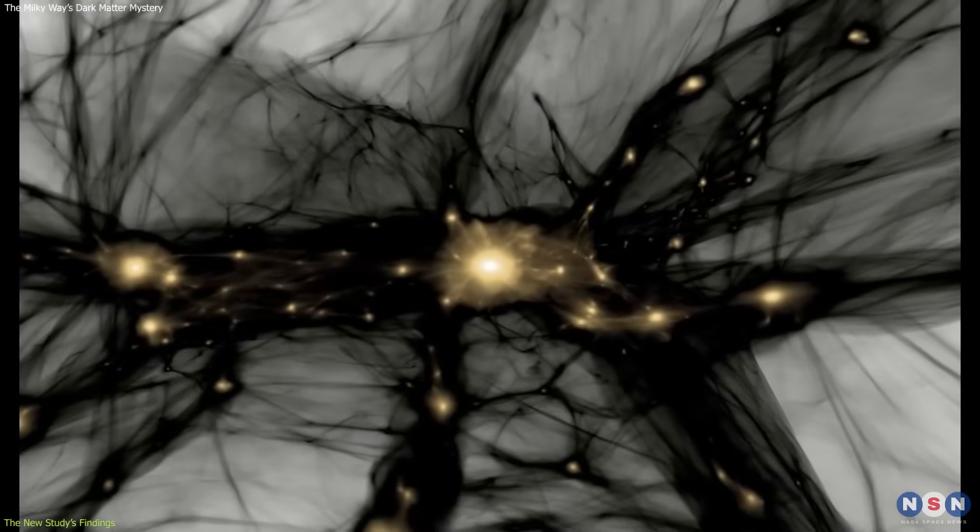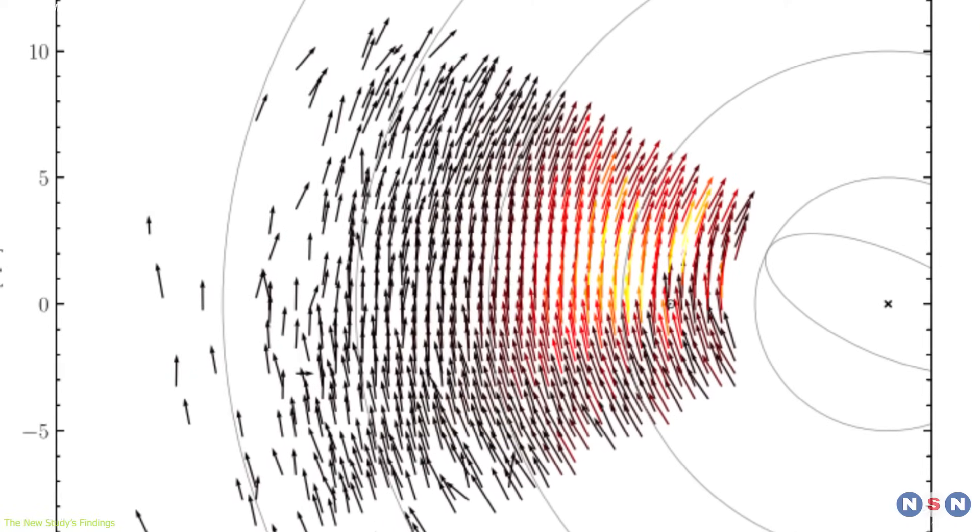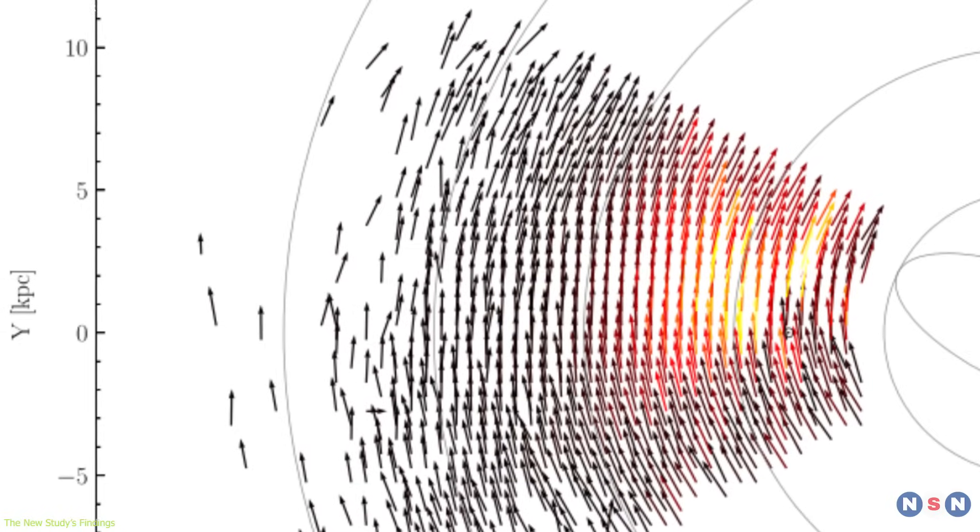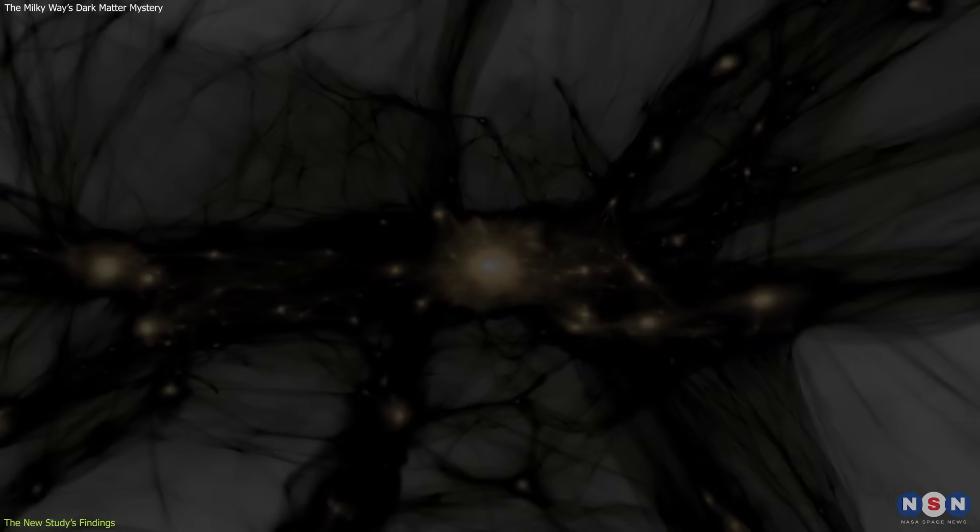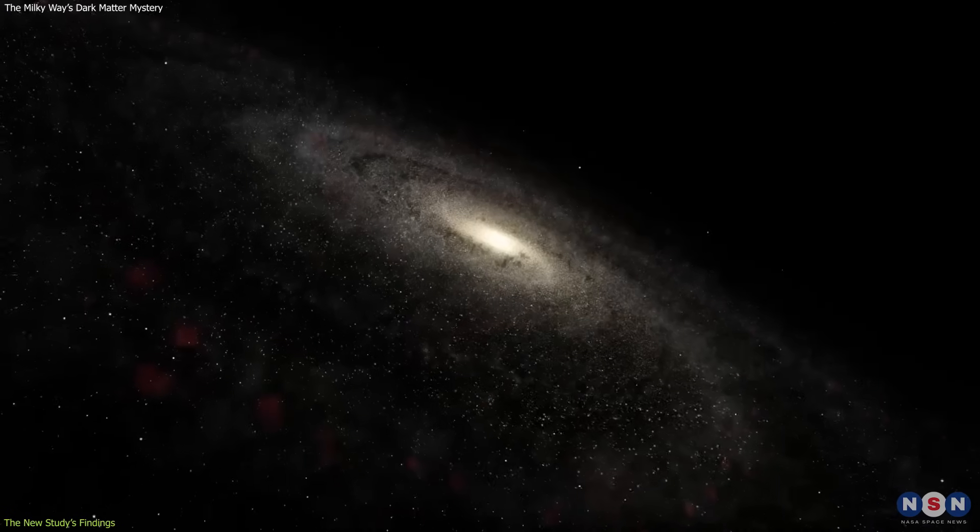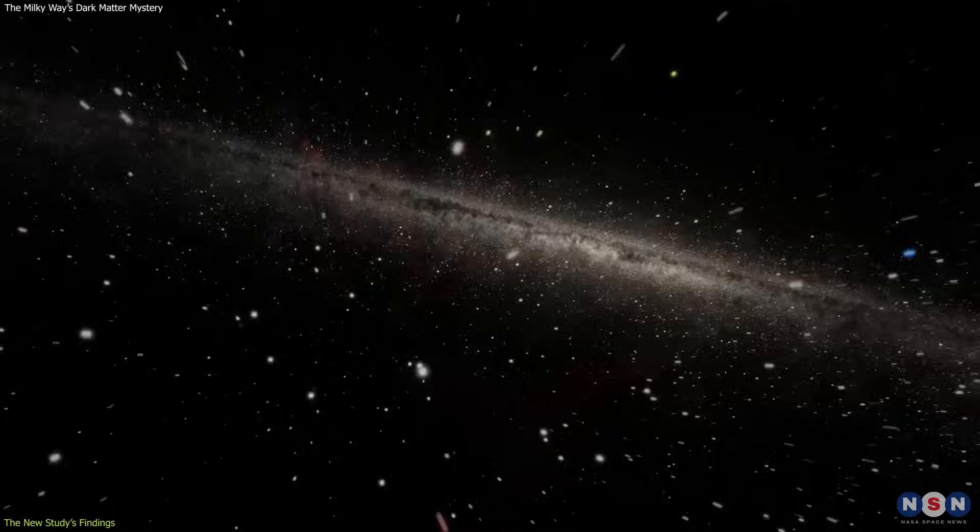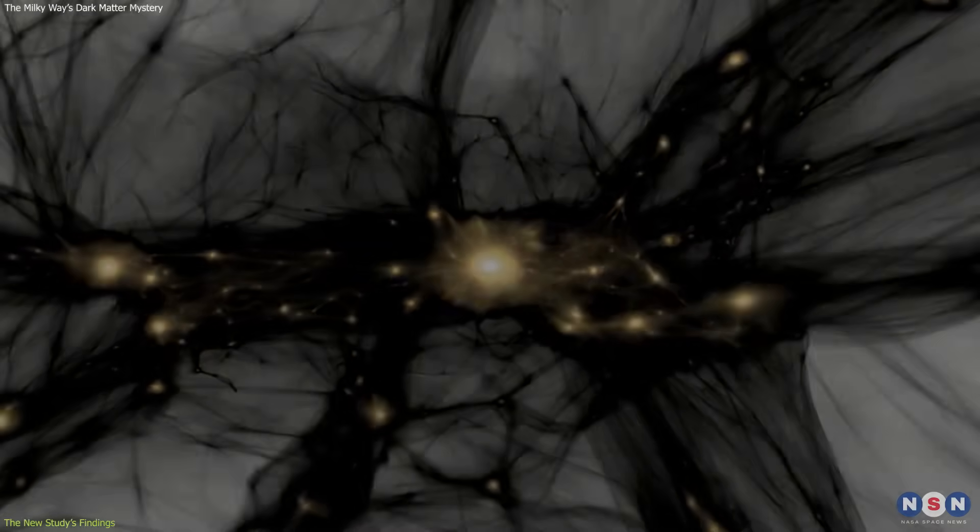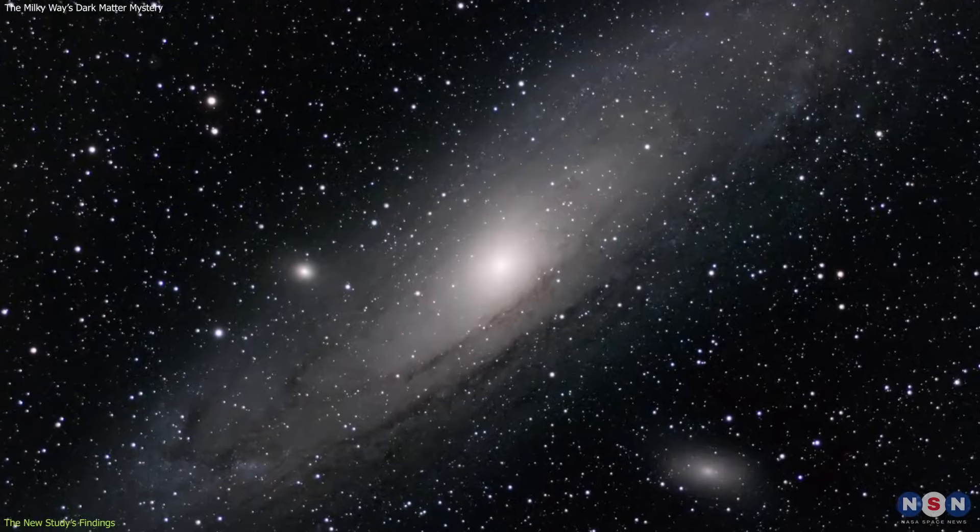One of the ways to measure the amount of dark matter in a galaxy is to look at the rotation curve, which is a graph that shows how the rotational speed of stars changes with their distance from the center of the galaxy. If the galaxy has a lot of dark matter in its core, then the rotation curve should be flat or rising, meaning that the stars at the edge of the galaxy should be moving faster than the stars near the center, due to the extra gravitational force of the dark matter. This is what we observe in many other galaxies, such as Andromeda, our nearest neighbor.